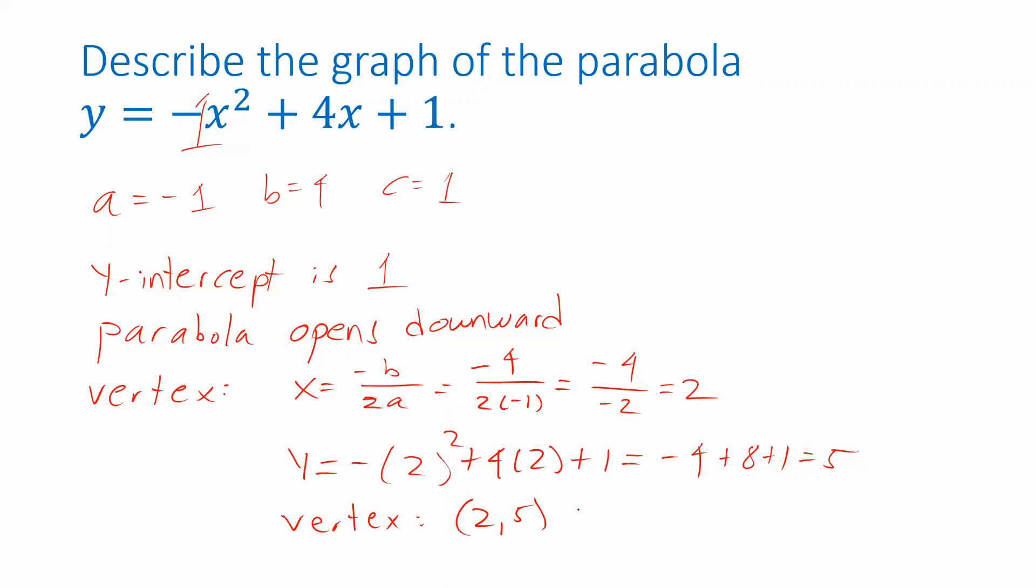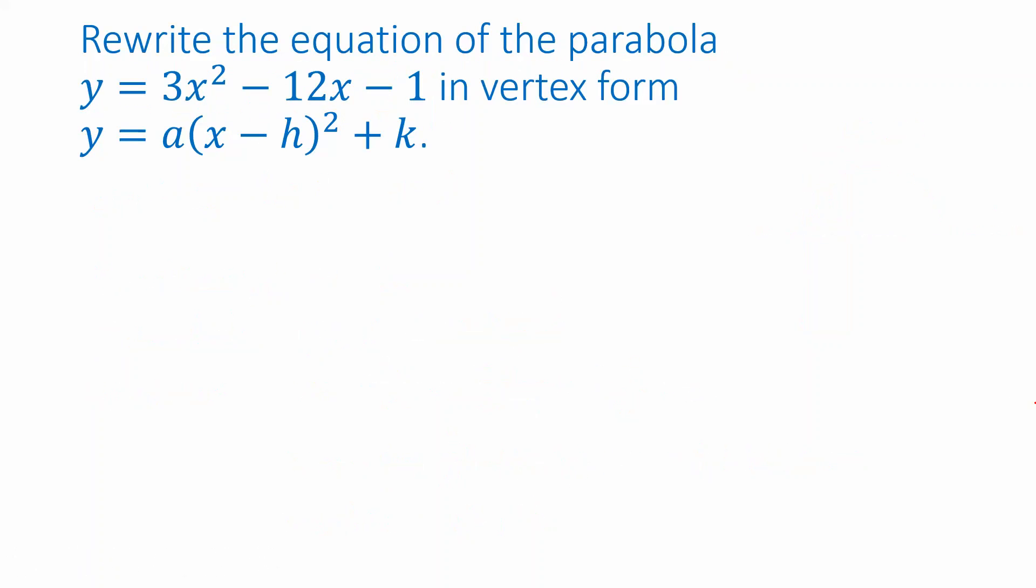So the vertex is at the point with x-coordinate 2, y-coordinate 5. And so now I could sketch this. I have a parabola opening downward. The highest point is at 2, 5. I know that I'm going to have a y-intercept at a height of 1, and the x-axis should be a little bit below that.